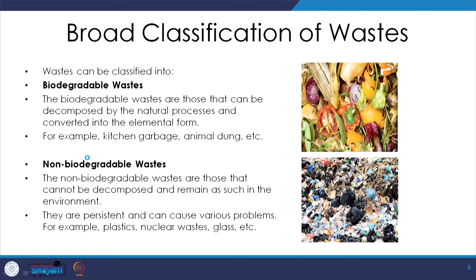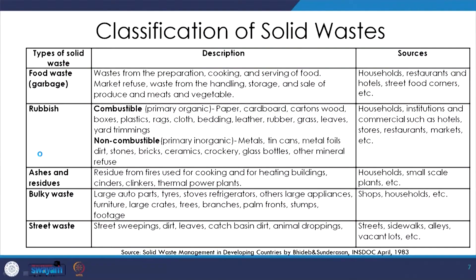We can broadly categorize waste into two categories: biodegradable waste and non-biodegradable waste. Biodegradable wastes are those which can be decomposed by natural processes and converted into elemental form. Non-biodegradable waste cannot be decomposed and remains as such in the environment — persistent and causing various problems. Looking at the classification of solid waste, we have food waste, rubbish — which includes combustible rubbish and non-combustible rubbish. Combustible rubbish includes paper, cardboards, cartons, rags, cloth, bedding, leather, rubber, and garden trimmings.